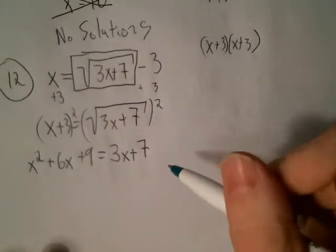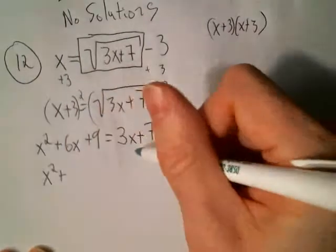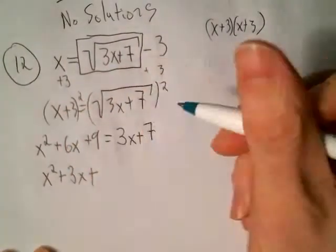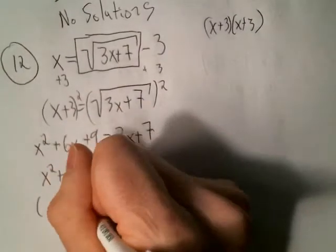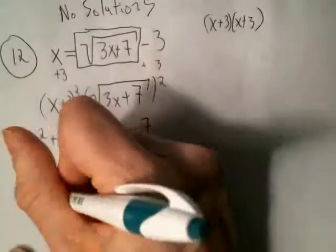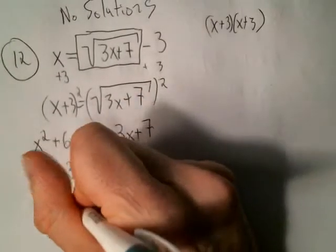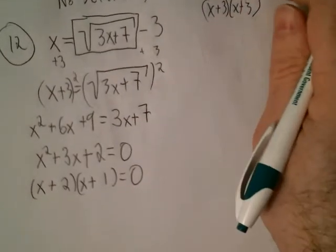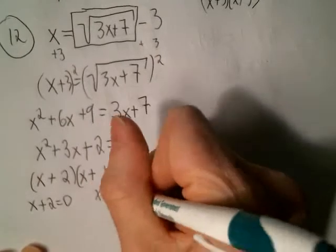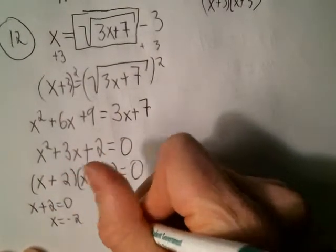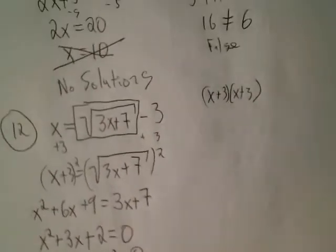We end up with a quadratic equation, so set it equal to zero. Subtract 3x on both sides — 6x minus 3x is 3x. Subtract 7 — 9 minus 7 is 2. So x squared plus 3x plus 2 equals 0. Factor: it looks like plus/plus, with factors of 2 being 2 and 1. Apply the zero factor property, setting each factor equal to zero, giving two potential solutions. We still need to check.